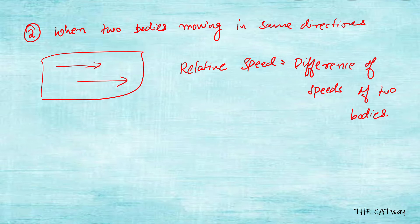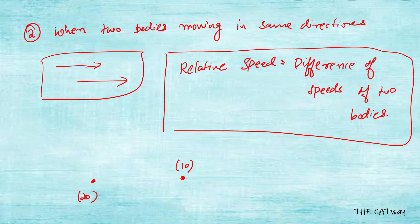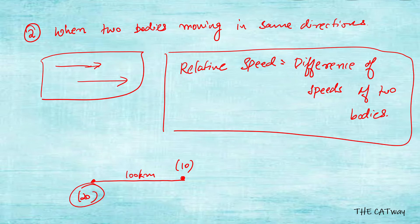Now let's understand why we subtract in the same-direction case and why we add in the opposite-direction case. Let's say there is one body here with a speed of 20 kilometers per hour, and another body here with a speed of 10 kilometers per hour, and the distance between them is 100 kilometers. Relative speed is used to determine how much time it will take for the second body to cover this 100 kilometers and reach the same position as the first body.